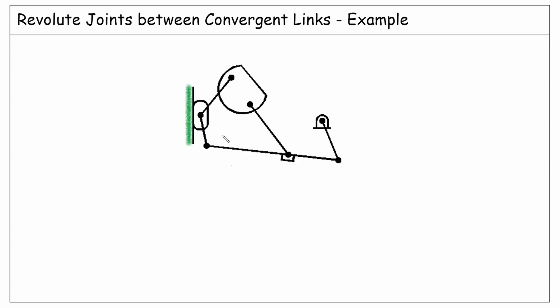Let's have another example where we have a slider and also we see a new symbol here. This slider has a prismatic joint with this wall which can be assumed as the ground.